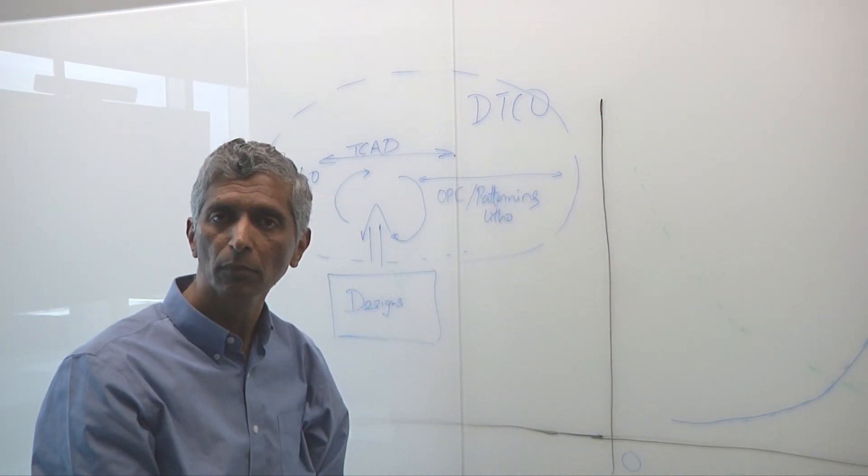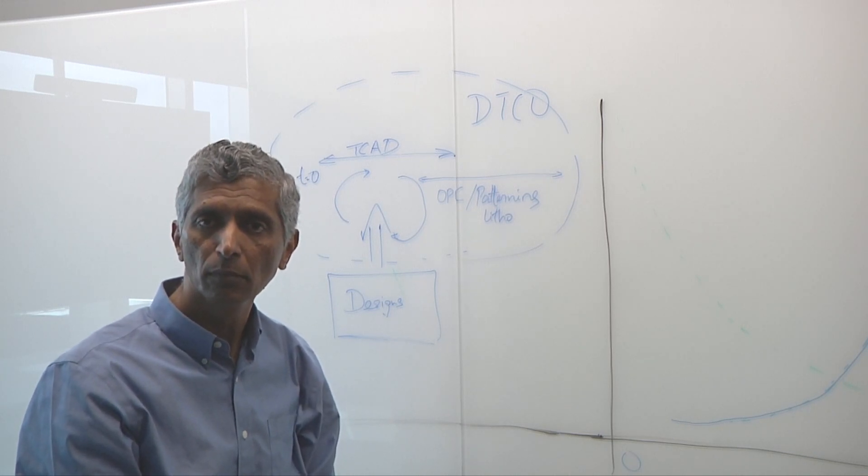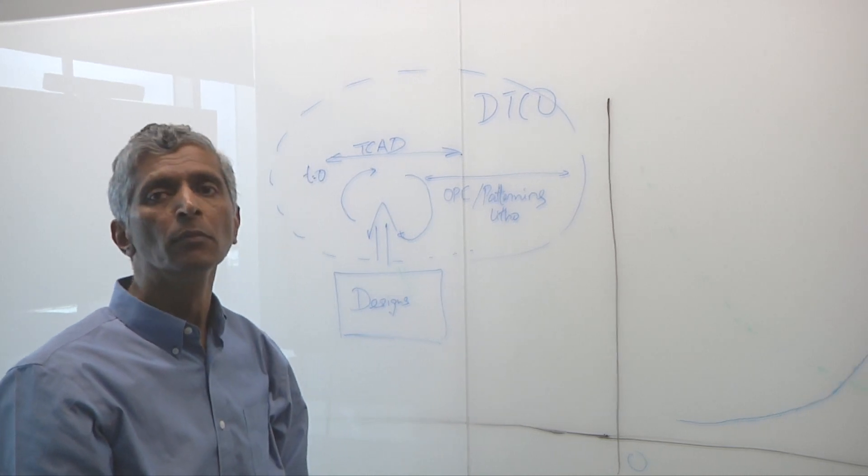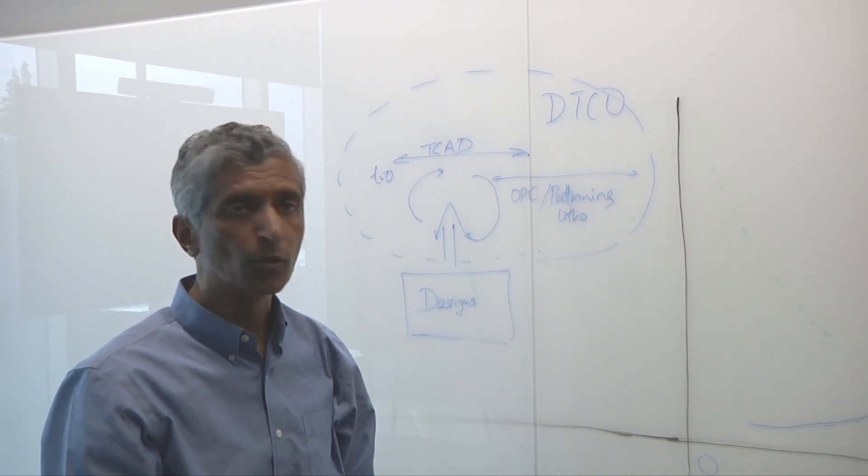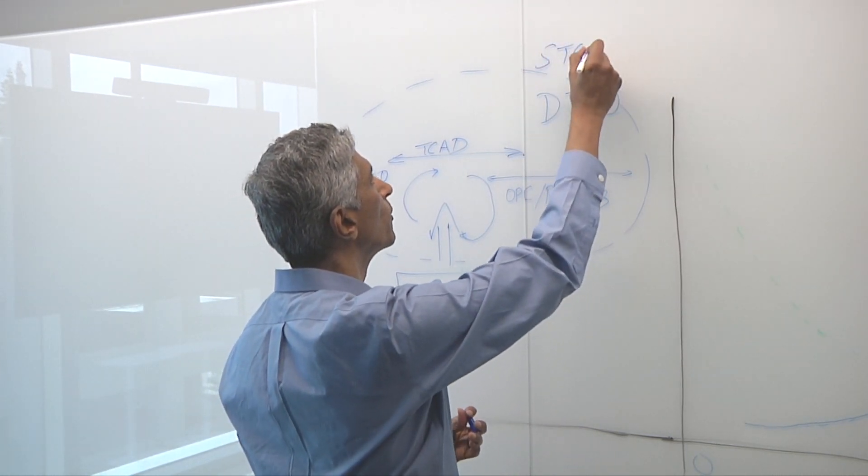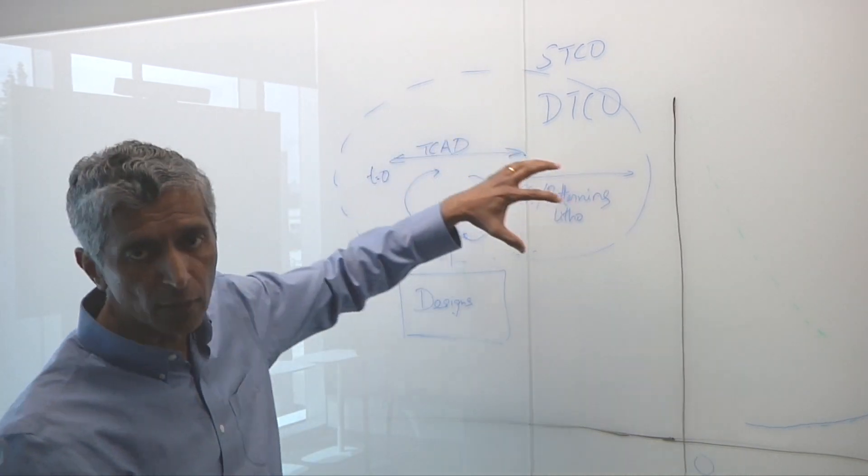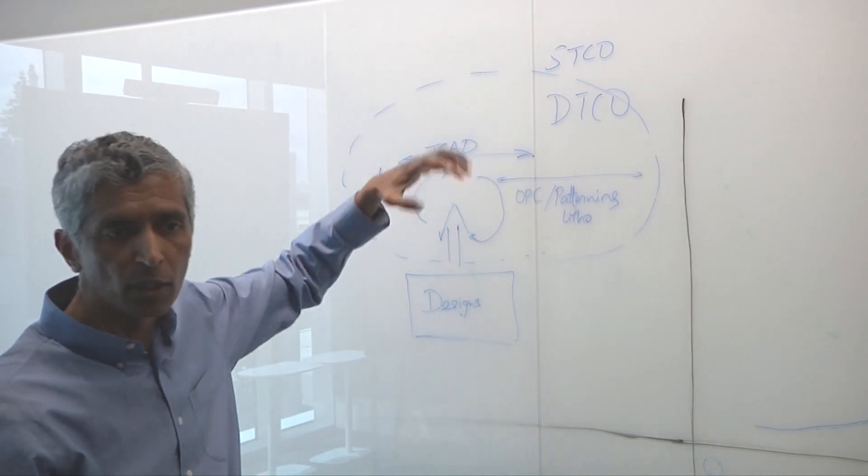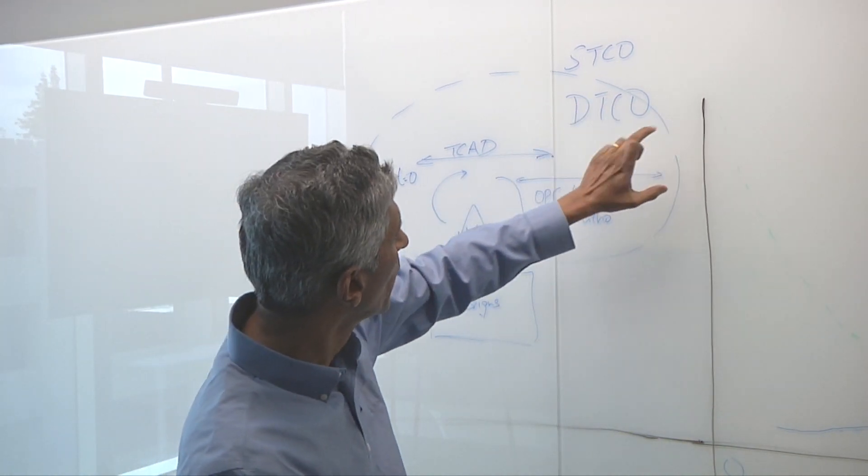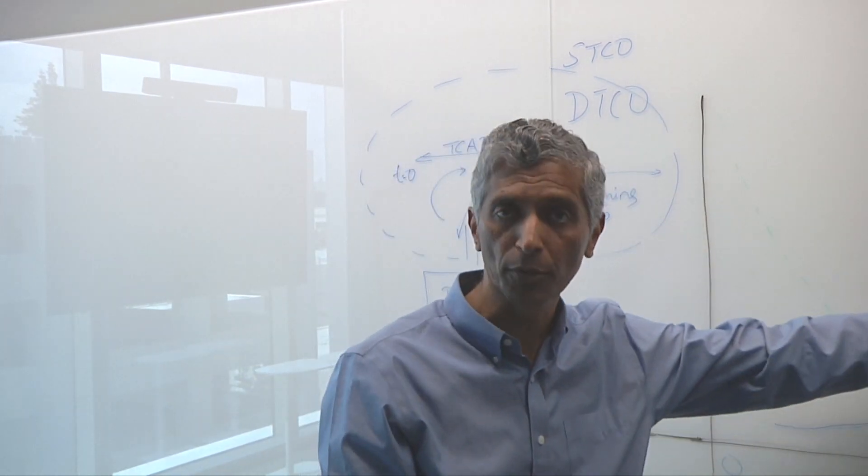It's gotten more complicated than that, though, right? Because now DTCO has given way to system technology co-optimization. You now have to think about this in the context of everything else that goes with it. Indeed. Yeah, so from DTCO there's this thing about STCO. But that is where you're bringing system constraints into the picture, including what kind of software you run and so on. But for the purpose of this conversation, I want to talk about how we go from creating this process and then ramping it into production.